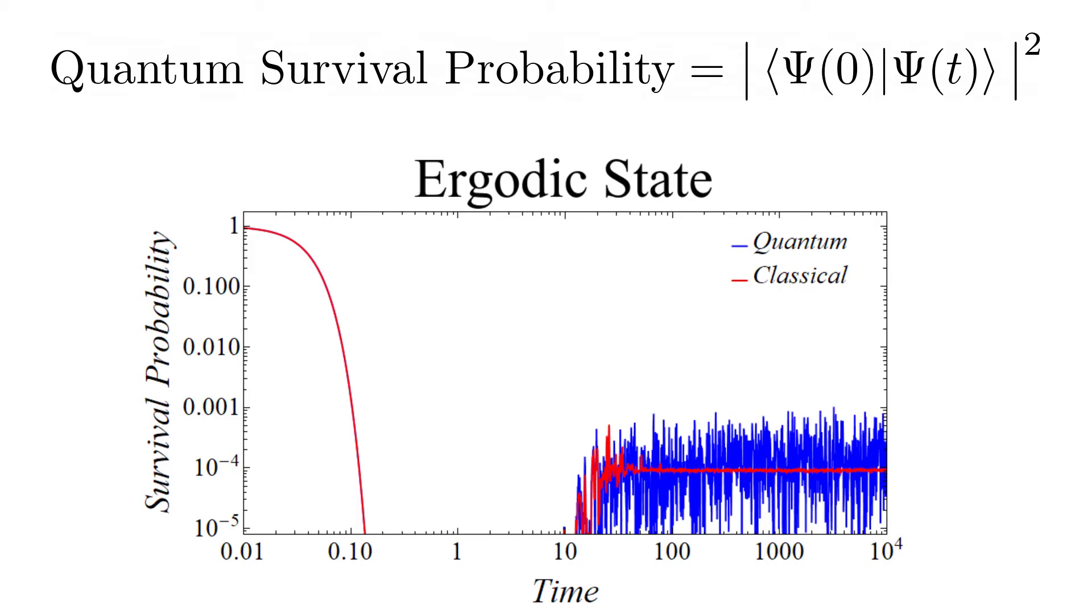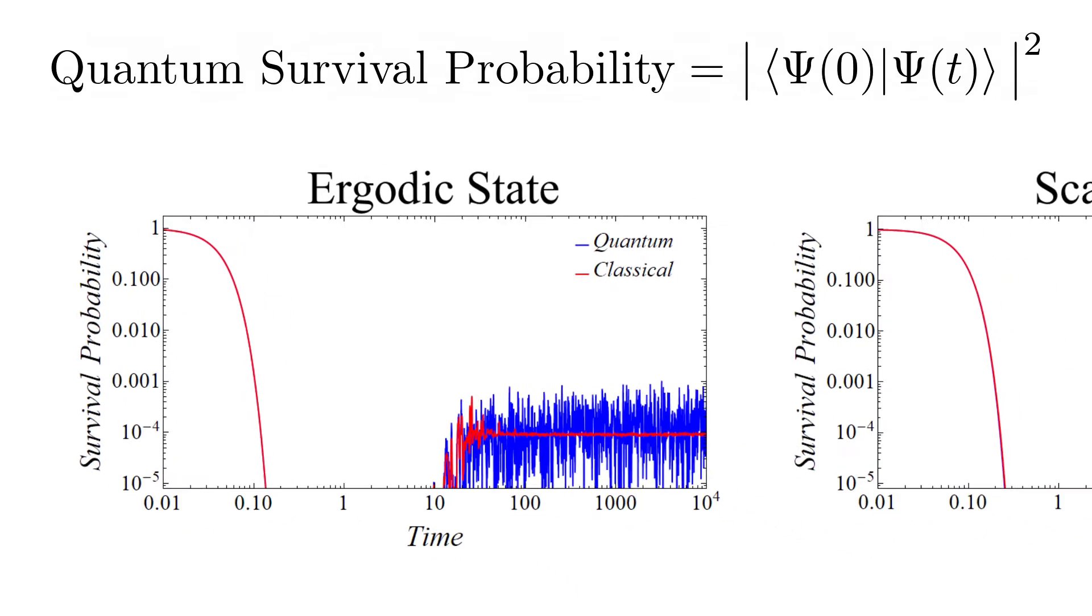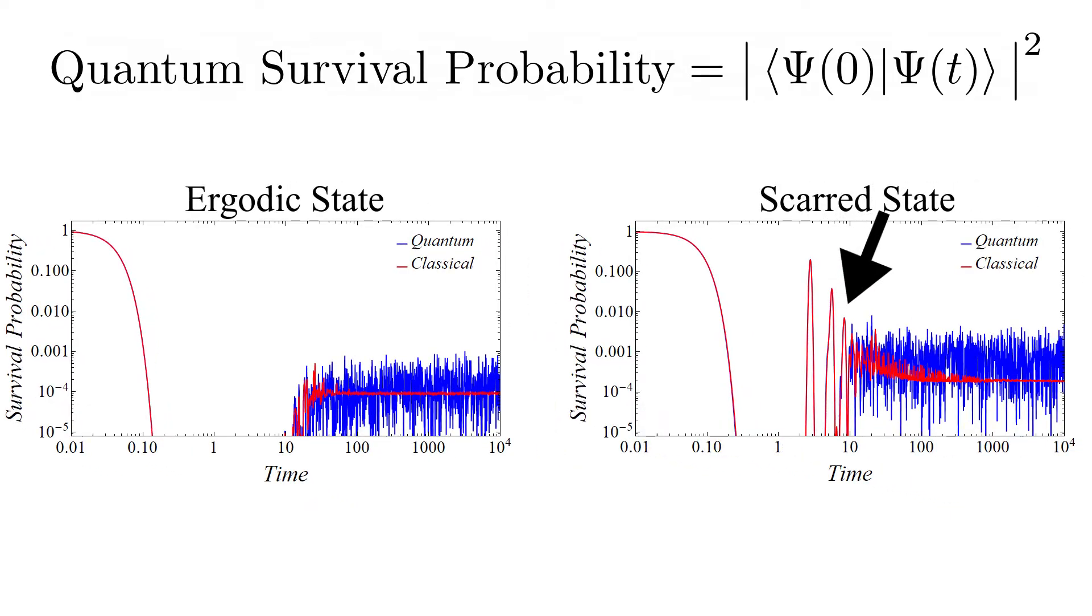Now let us show you the same plot for another state also in the chaotic regime. This state shows periodic revivals and a much higher quantum equilibration value, due to an effect known as quantum scattering.